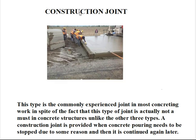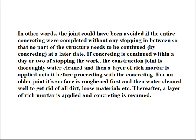Number 1: Construction Joint. This type is the most commonly experienced joint in most concreting work, in spite of the fact that this type of joint is actually not a must in concrete structures, unlike the other three types. A construction joint is provided when concrete pouring needs to be stopped due to some reason and then continued again later. In other words, the joint could have been avoided if the entire concreting were completed without any stopping in between, so that no part of the structure needs to be continued by concreting at a later date.